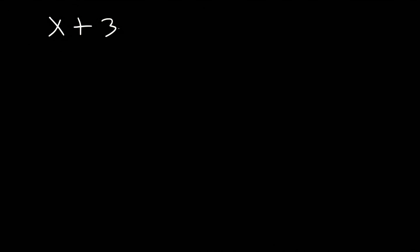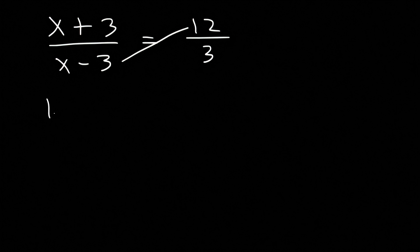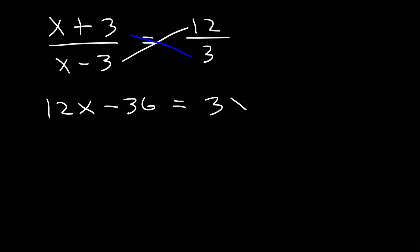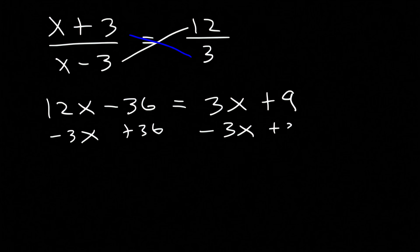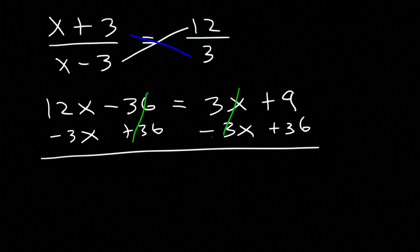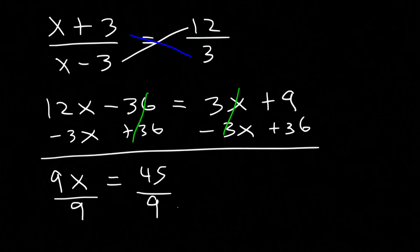Here's the next one: x plus 3 divided by x minus 3 equals 12 over 3. Whenever you have two fractions separated by an equal sign, you want to cross multiply. So 12 times x minus 3 is 12x minus 36, and 3 times x plus 3 is 3x plus 9. Now let's subtract both sides by 3x and add 36 to both sides. 12x minus 3x is 9x, and 9 plus 36 is 45. 45 divided by 9 is 5, so x is equal to 5.